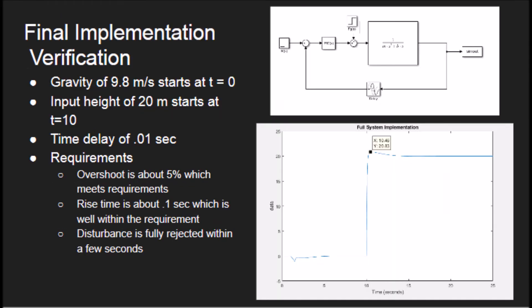We took the controller from the last part and put it in Simulink and applied a unit step input and a unit step disturbance. The response shown in the graph in the bottom right shows that the disturbance due to gravity is implemented at time zero and an input height of 20 meters starts at time 10 seconds. This is why you see such a flat line until 10 seconds, and then the drone jumps upwards with minimal overshoot.